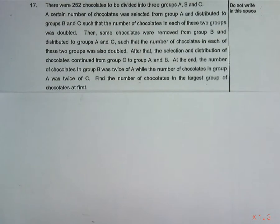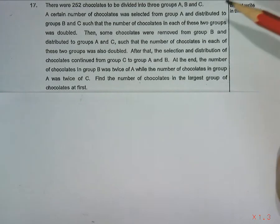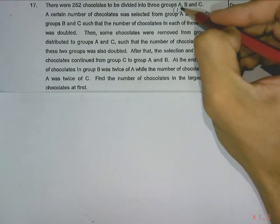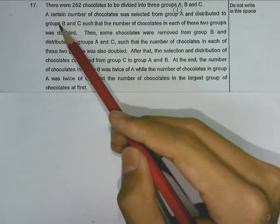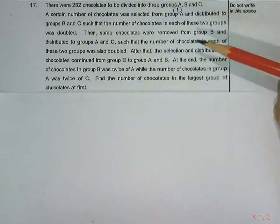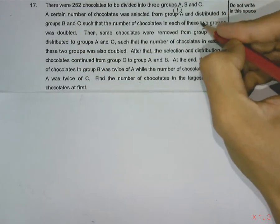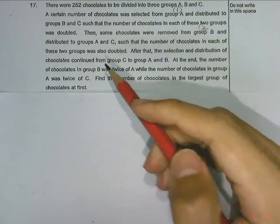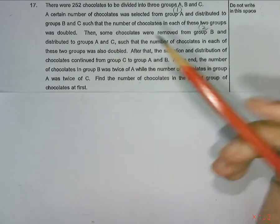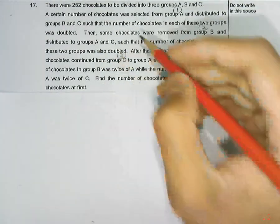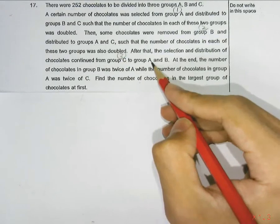If we dissect this question, we will realise that there were 3 main actions taken. The first step is where chocolates were taken from group A and distributed to groups B and C. In the second step, chocolates were removed from group B and distributed to groups A and C. In the third step, chocolates were taken from group C and given to groups A and B.